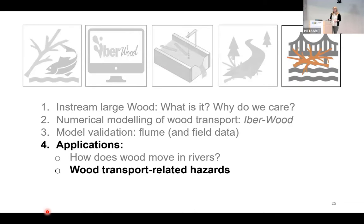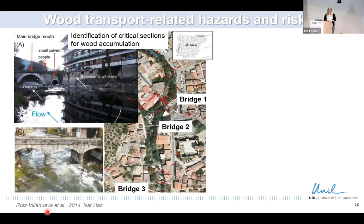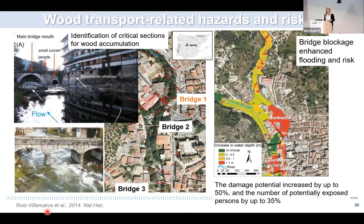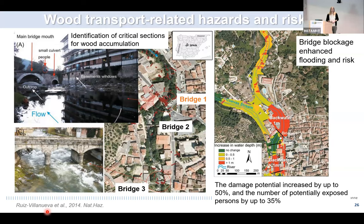Regarding potential hazards, one of the first works we did was use the model to identify critical sections in a river crossing a town with several bridges, identifying which was most prone to trap wood. For the first time, we included wood transport in a flood risk assessment, quantifying potential losses and comparing scenarios with and without wood. We observed that bridge blockage caused up to 50% more economic losses for the same discharge.